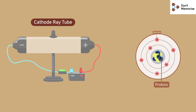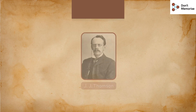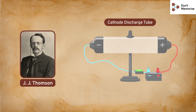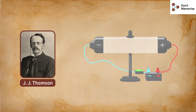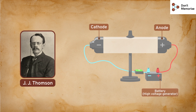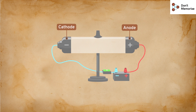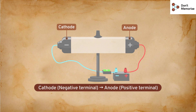But did you know that cathode ray tubes played a major role in the discovery of subatomic particles? In 1897, JJ Thomson studied a cathode discharge tube with a metal plate fitted at either end. One plate was connected to the positive terminal of a battery — called the anode plate — and the other to the negative terminal — called the cathode plate. A high voltage was applied and a vacuum was created between the two plates. When high voltage was applied, he observed a greenish-yellow fluorescence — these are cathode rays, which travel from the cathode terminal to the anode terminal.